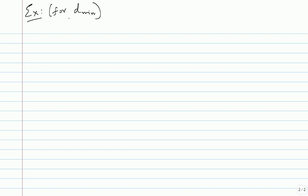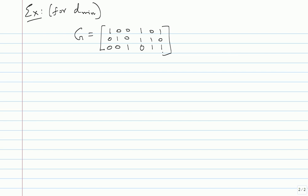Minimum distance is also called d_min. So I am going to give you a generator matrix and ask you for the three parameters N, K, and D. From the generator matrix: N is six, K is three. For minimum distance there are two ways. First: list out all codewords — there will be eight codewords. List all eight and pick the one with minimum weight.